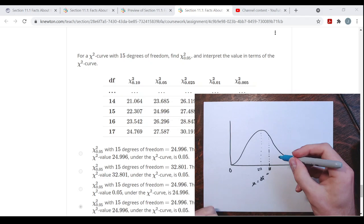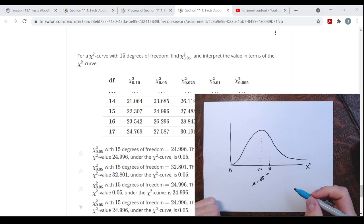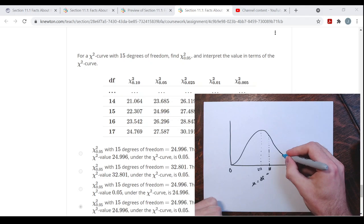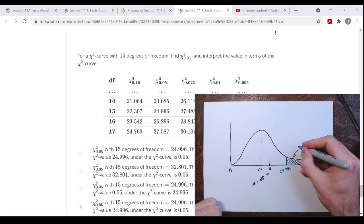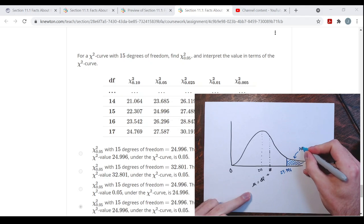And what this table is telling us is that the chi-square value—the value that has five percent to the right of it with 15 degrees of freedom—is 24.996. So this value is the one that has an area of five percent above it. That's what this is saying.